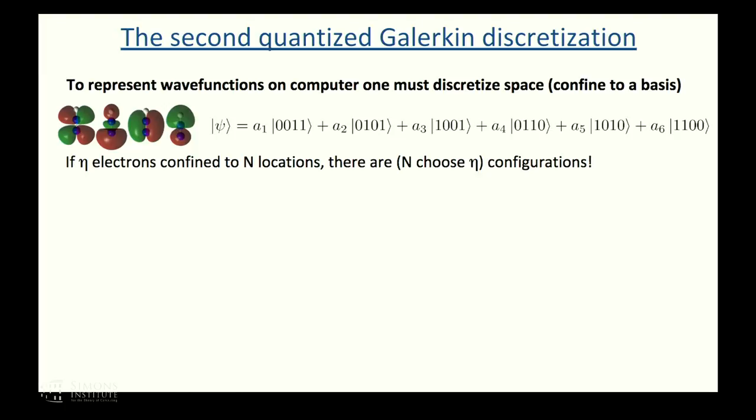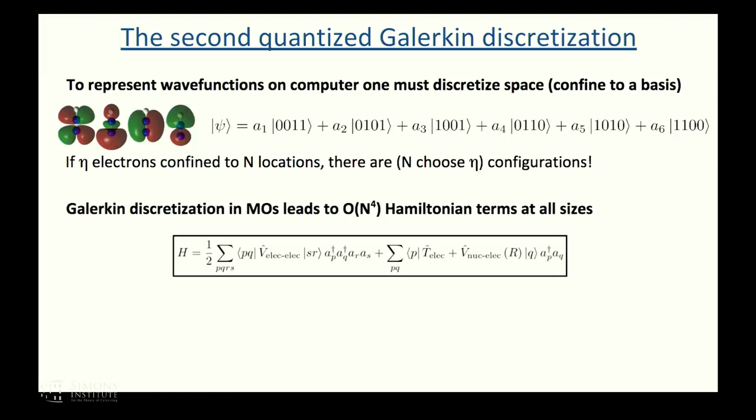This method of labeling what space is occupied instead of saying which electrons are where is consistent with the second quantized representation of electronic structure. There's different ways to obtain the actual discretization of the Hamiltonian, but perhaps the most common is what's called a Galerkin discretization, where you take integrals over these basis functions, which define a Hamiltonian that looks something like this, where these things are fermionic raising and lowering operators. For instance, a dagger p a q is an operator that transitions an excitation from orbital q to orbital p. This is in a finite basis, but up to the finite basis and relativistic effects, this is the exact many-body Hamiltonian.